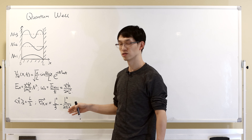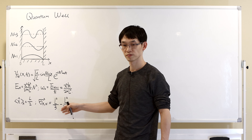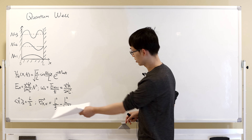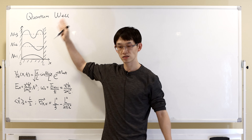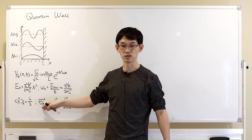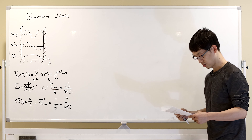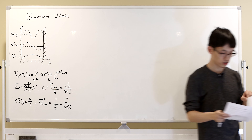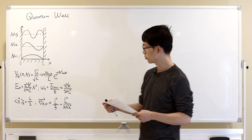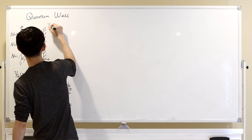You can calculate that using the definition, and inside you'll need to use integration by parts. What it tells you is that for all the eigenstates, you will get some uncertainty in your measurement.